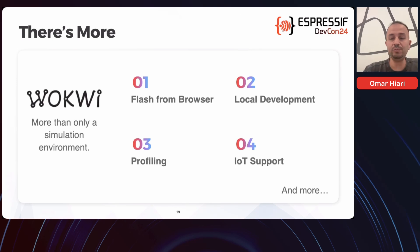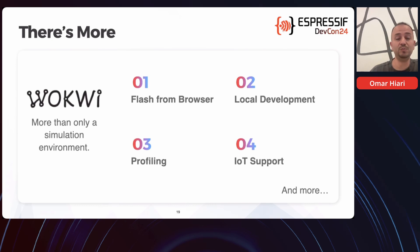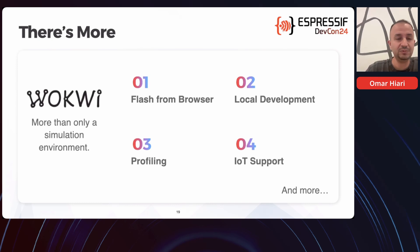There is more that WACWI offers — it's not just a simulation environment. If at a certain point you decide to connect hardware, you can flash immediately from a browser, and you can actually even do local development if you want to. With VS Code and JetBrains, there is support for WACWI where you can actually do the simulation from your own IDE. There are options for profiling. And what is also very interesting, there is IoT support — from the simulator, you can actually simulate the connection to Wi-Fi and interact with the internet or the cloud, doing HTTP requests and so on. There is much more, which for those interested can discover on the WACWI website.